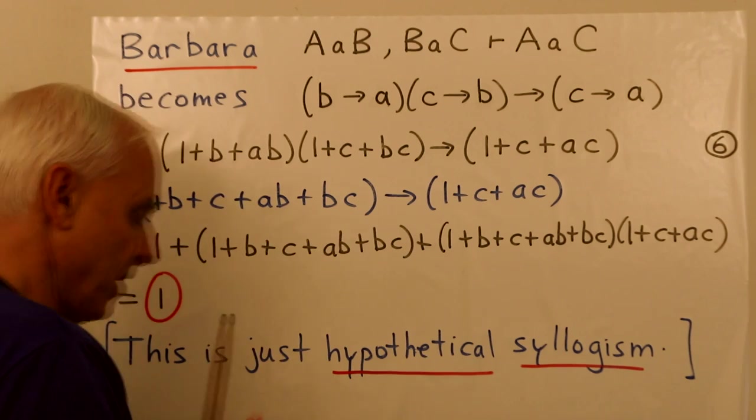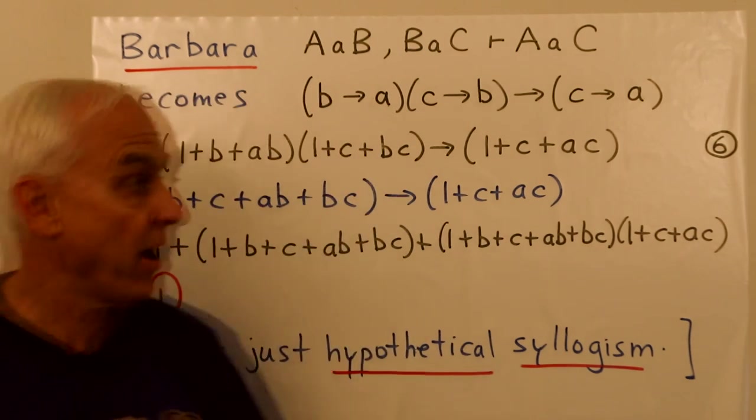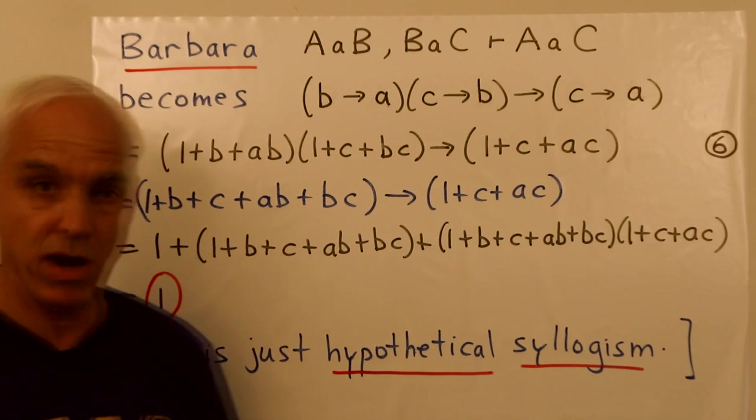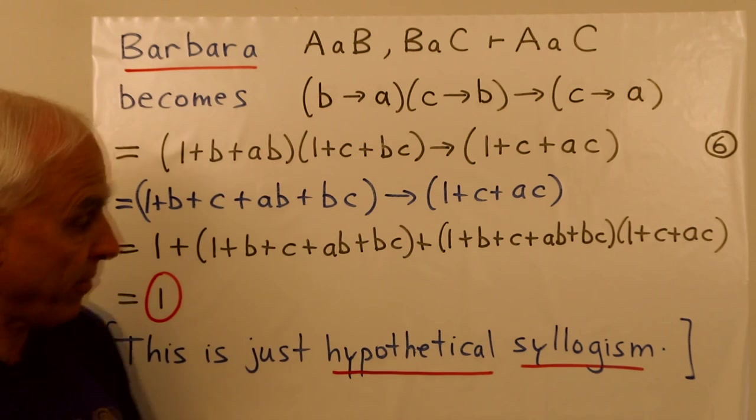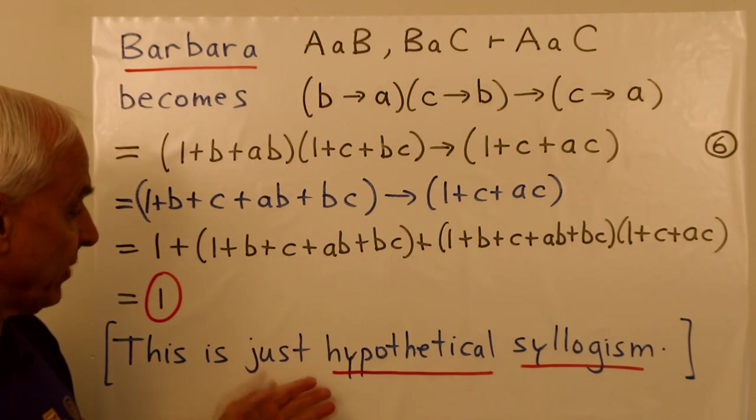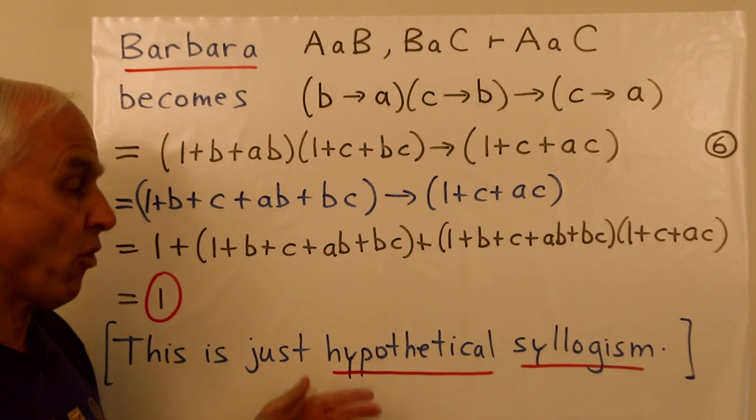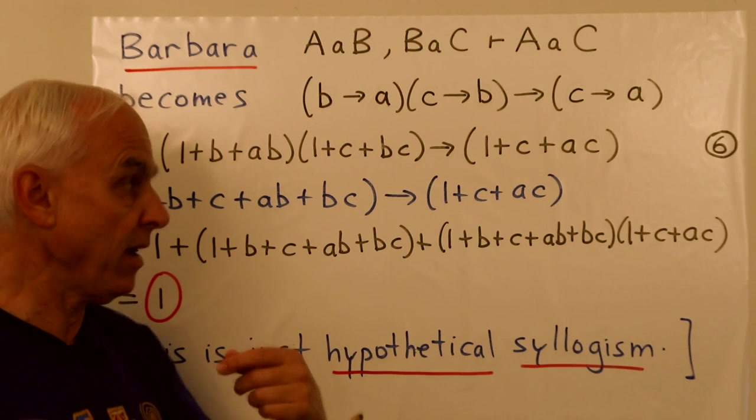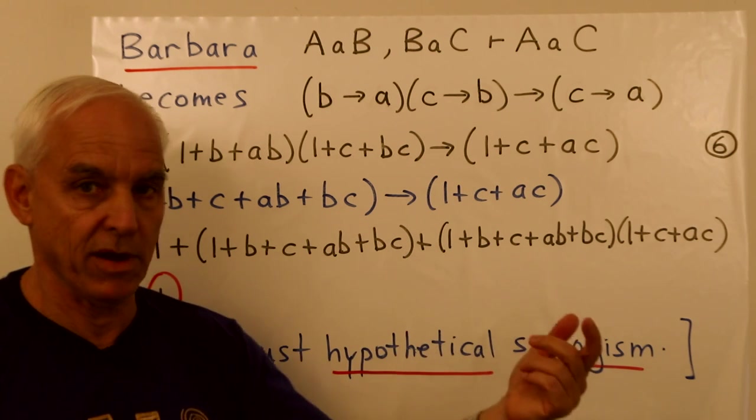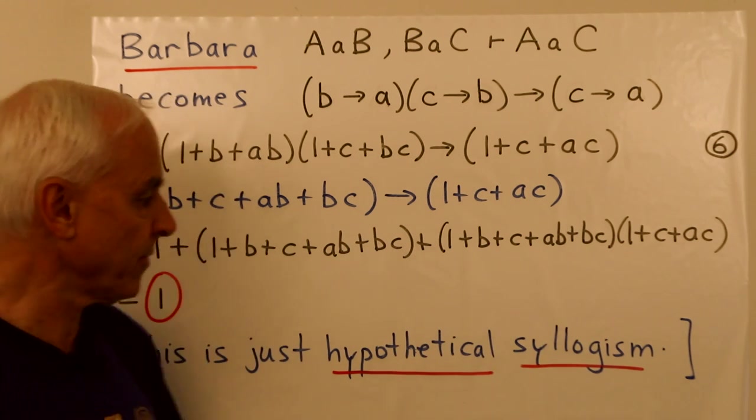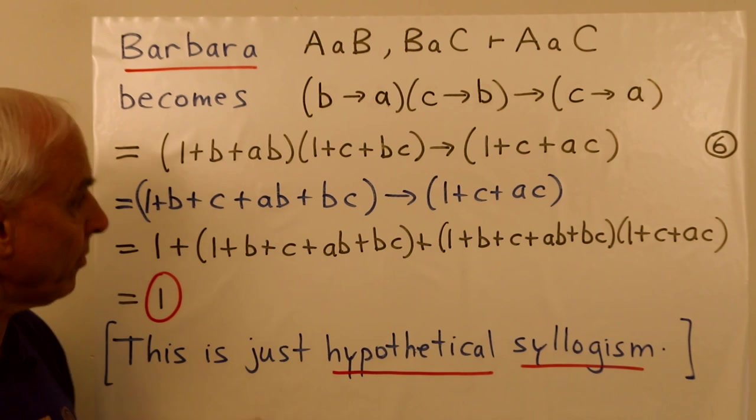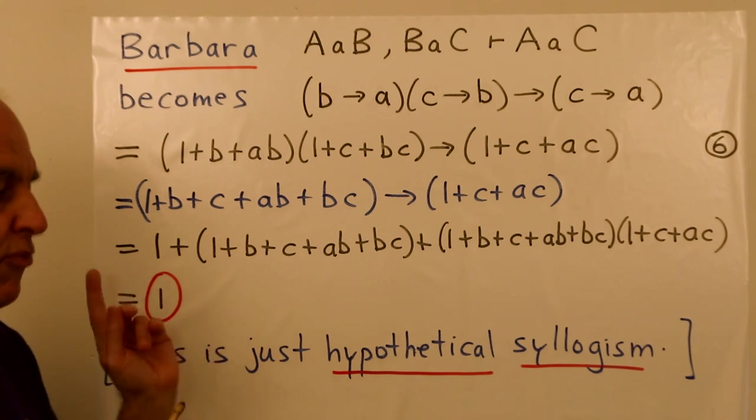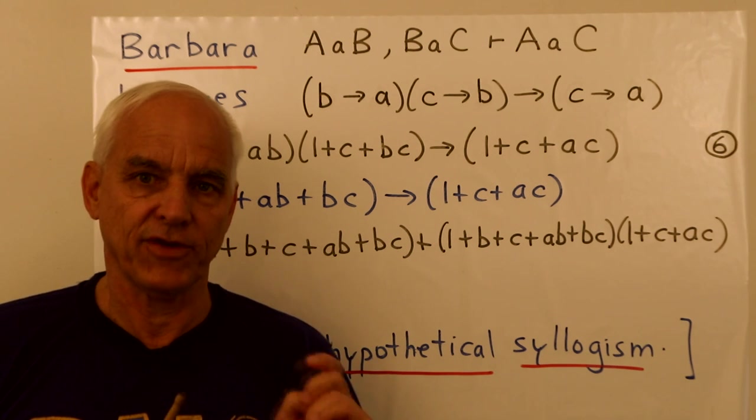One. That's what we want. As a Boole polynomial, this thing here is equal to one. And that proves Barbara. Now Barbara, you will probably recognize, it's really just the same as what we formally called hypothetical syllogism. If B implies A and C implies B, then C implies A. Aristotle was there first. This is a completely cut and dried proof of this syllogism. It doesn't require any kind of clever insight or even any decision making. We're just expanding and simplifying.